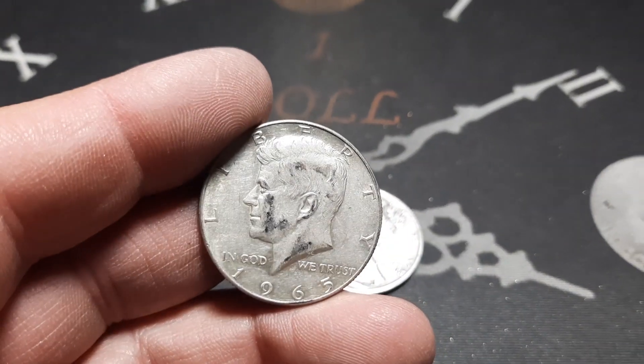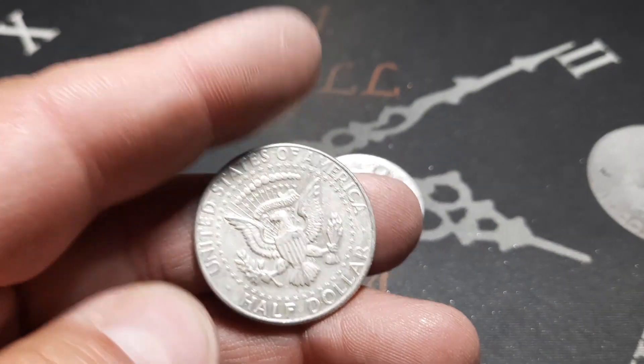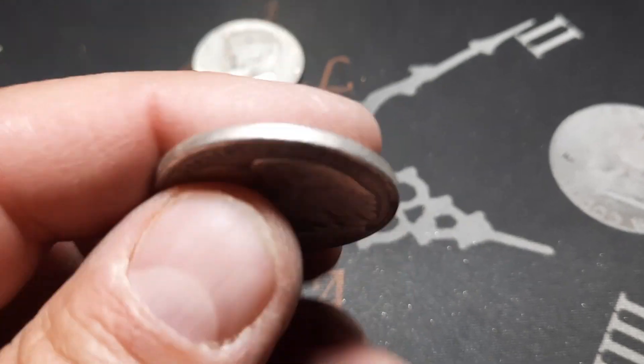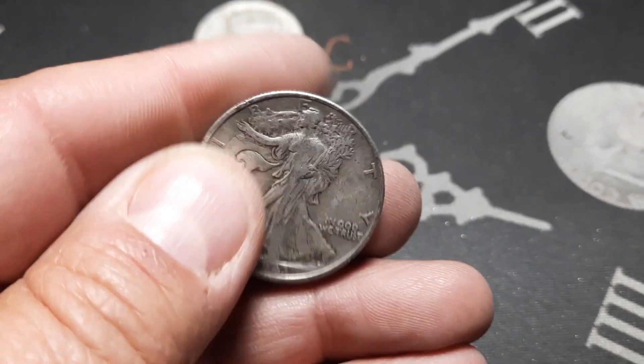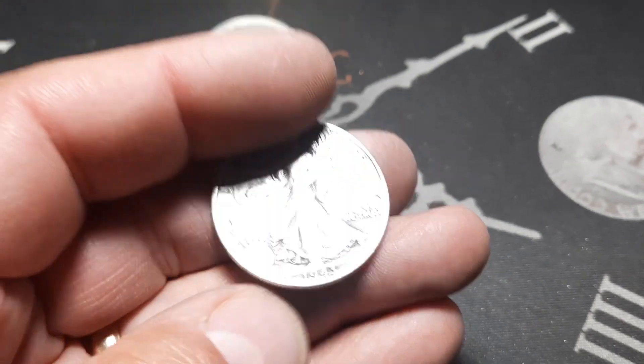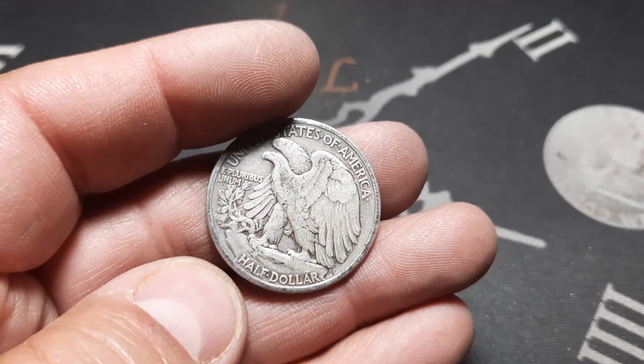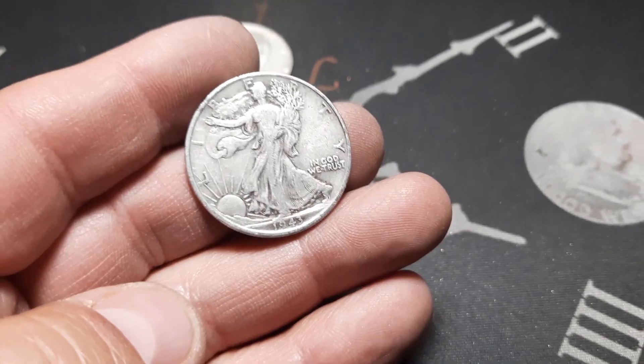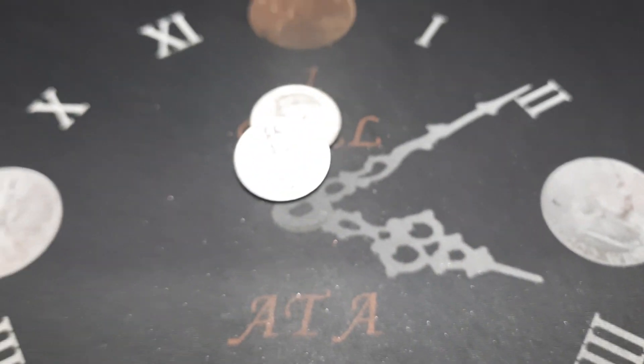We got a 1965 and then roll 50 again we got a 1943 out of Philly. That is about the fourth time this year that I've had a silver in the 50th roll. Three with half dollars, one with quarters. Very cool.